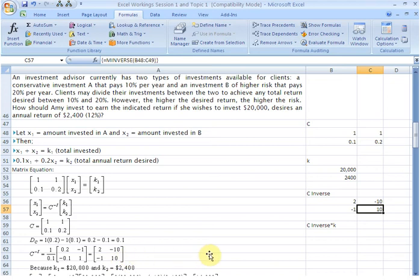And the solution is going to be given by C inverse multiplied by the K vector. So we have the K vector also here filled in for Amy. So we just need to perform now a matrix multiplication, C inverse multiplied with K vector.